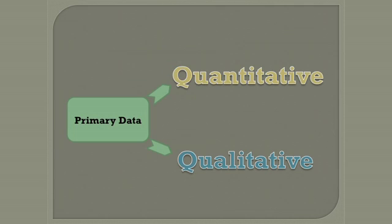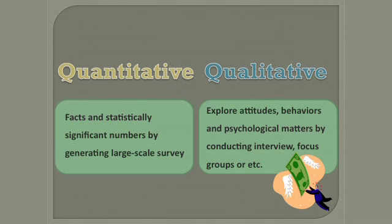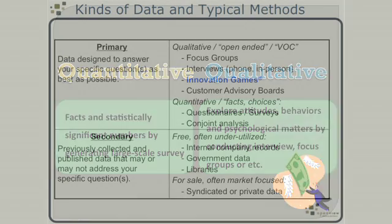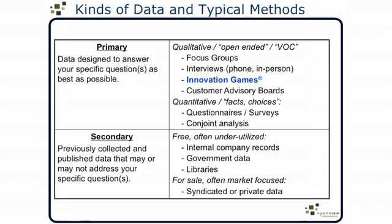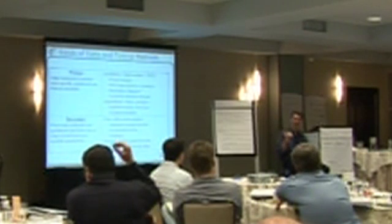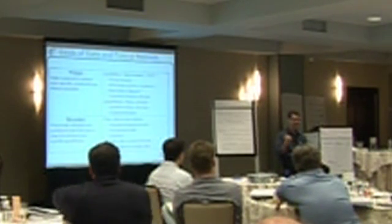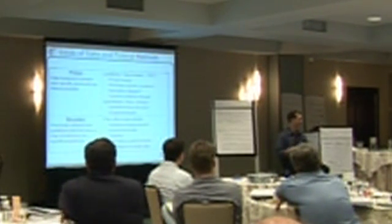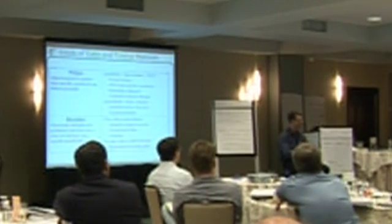For primary data, there's two flavors: qualitative and quantitative. Quantitative is the facts and the statistically significant stuff — the way I look at it is more fun and more cheap versus less fun and less cheap. There are two different kinds of surveys. An interview and a survey are very different when it's truly statistically significant, because now instead of calling some customers, you have to worry about sampling, sample size, validity of sampling, et cetera — and it jacks up the price.